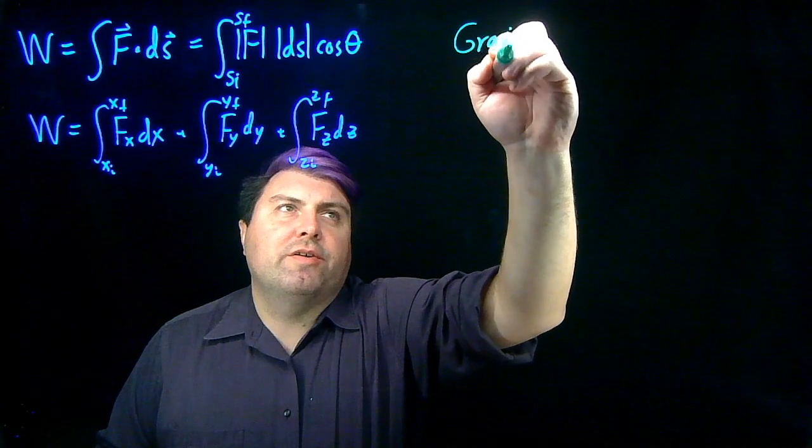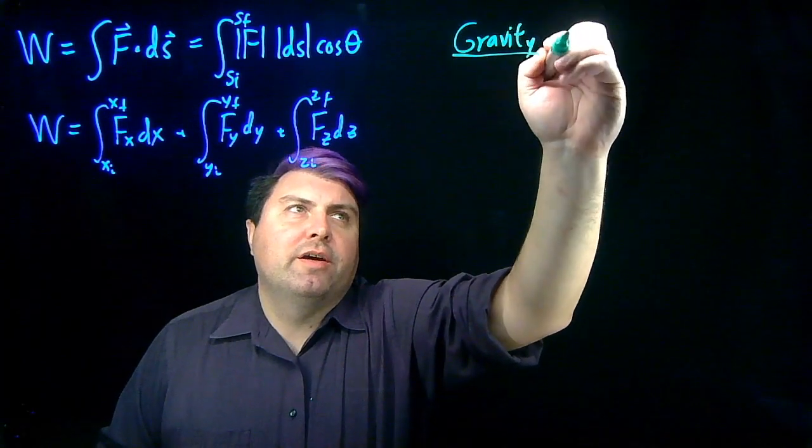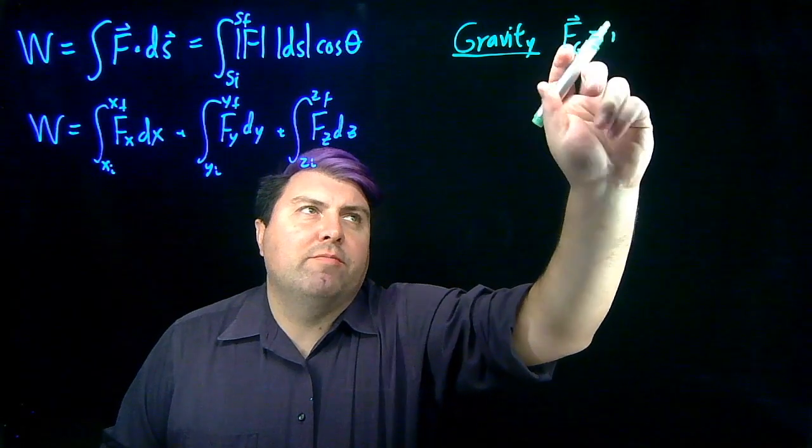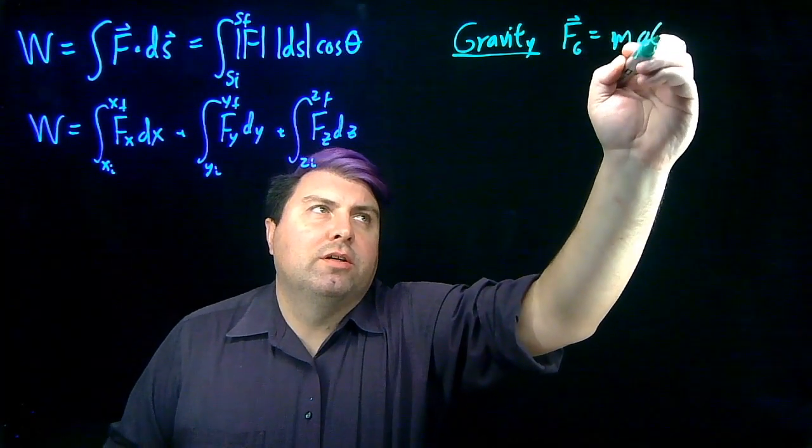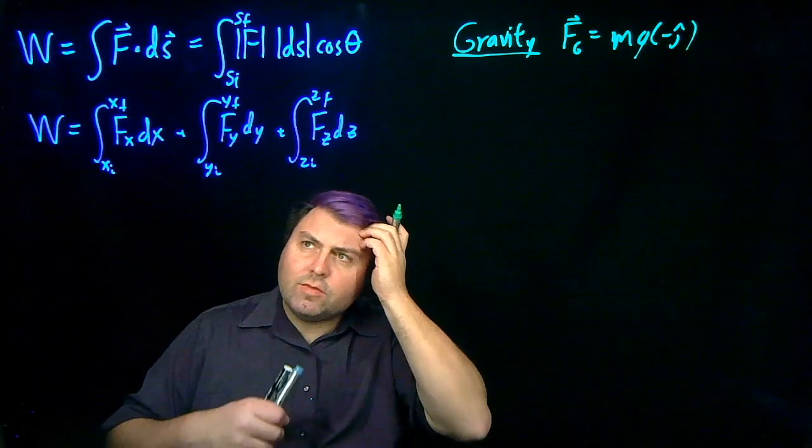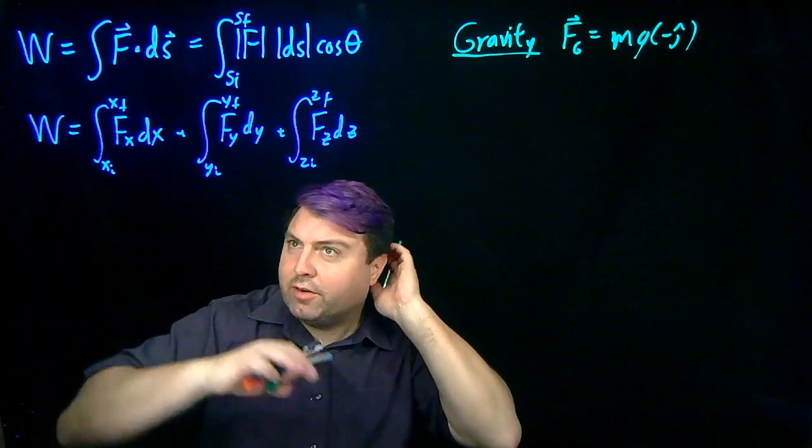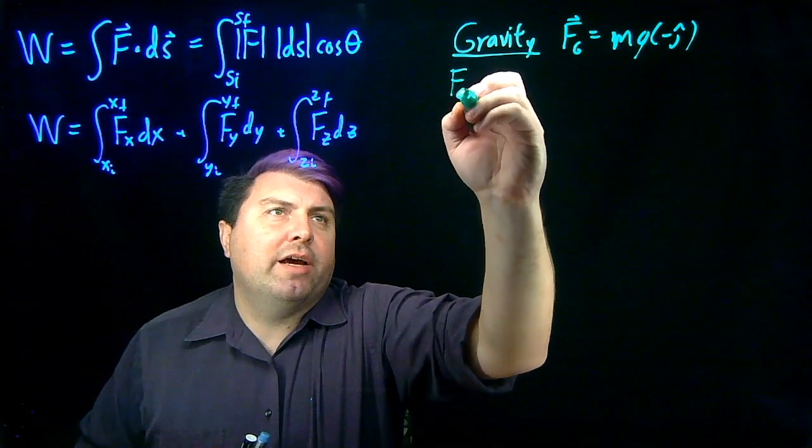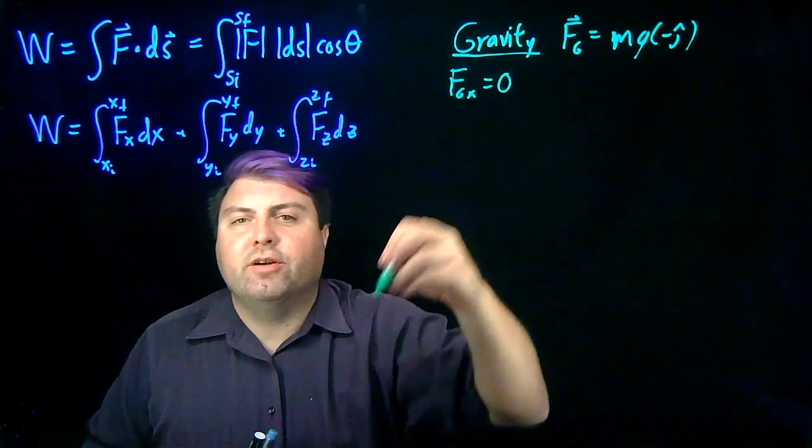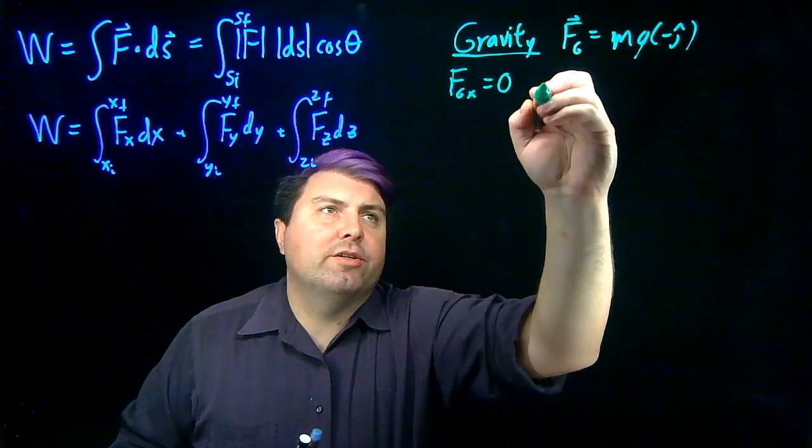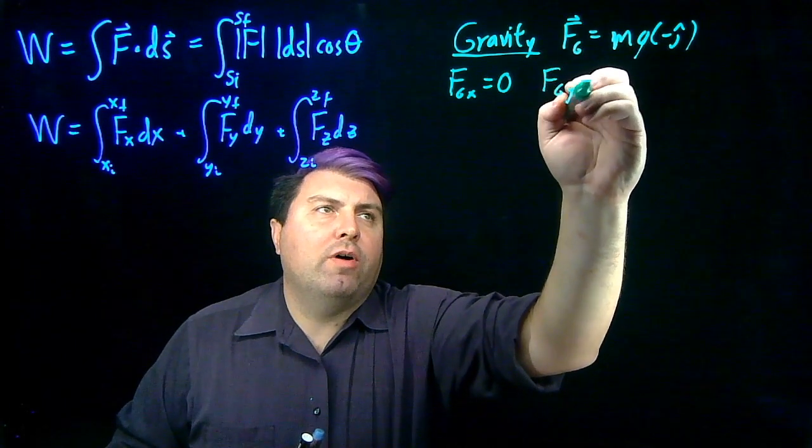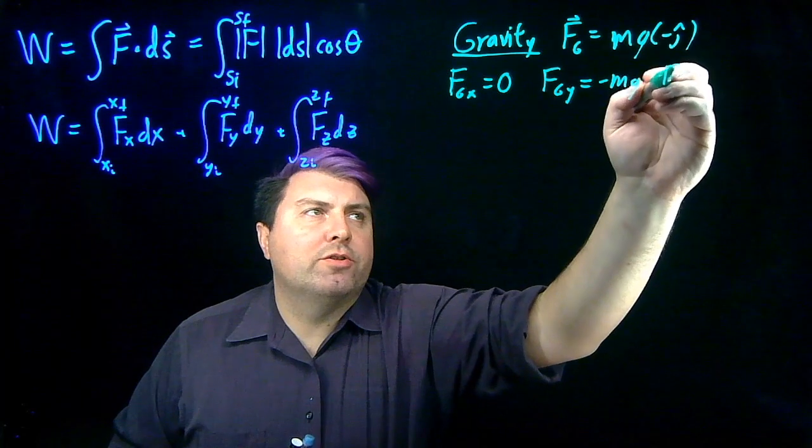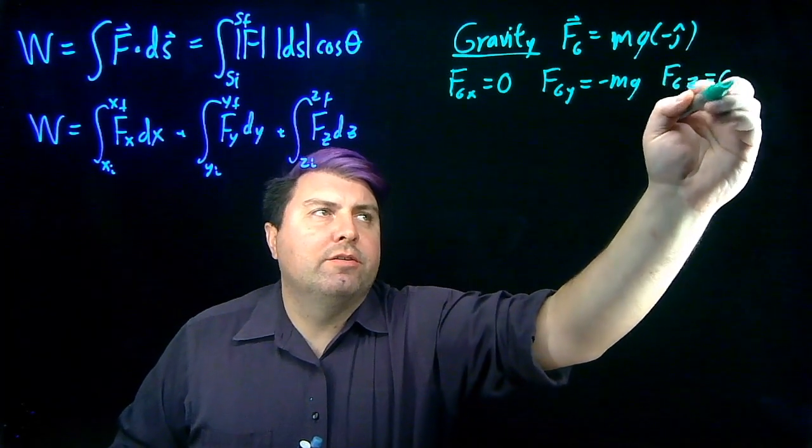So gravity is always a great case to start out with. Our gravity, in a general sense, is going to be mg in the negative j hat direction. So because we're still learning, we might want to try it from this thing. Can I write the force of gravity in the x direction? Well, that should be zero, right? Force of gravity doesn't work in the x direction. Force of gravity in the y direction will be negative mg. And force of gravity in the z direction will be zero.